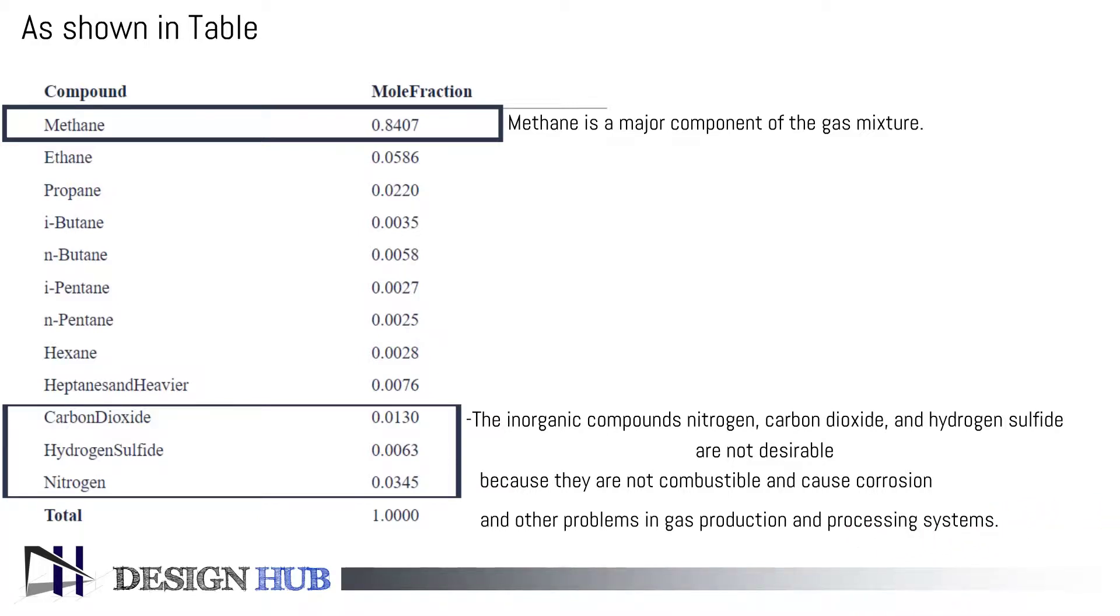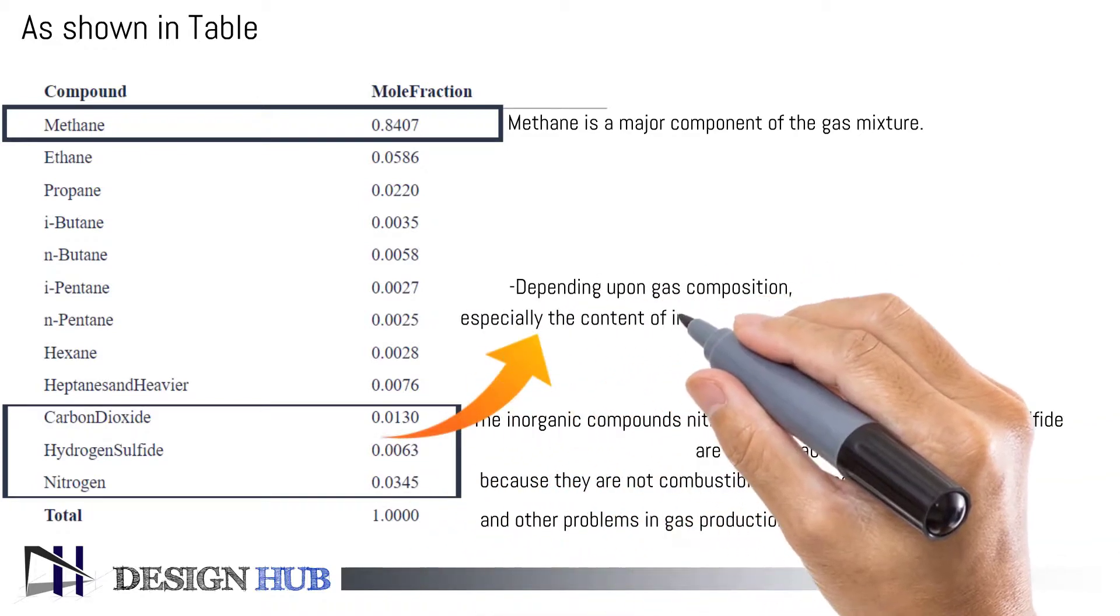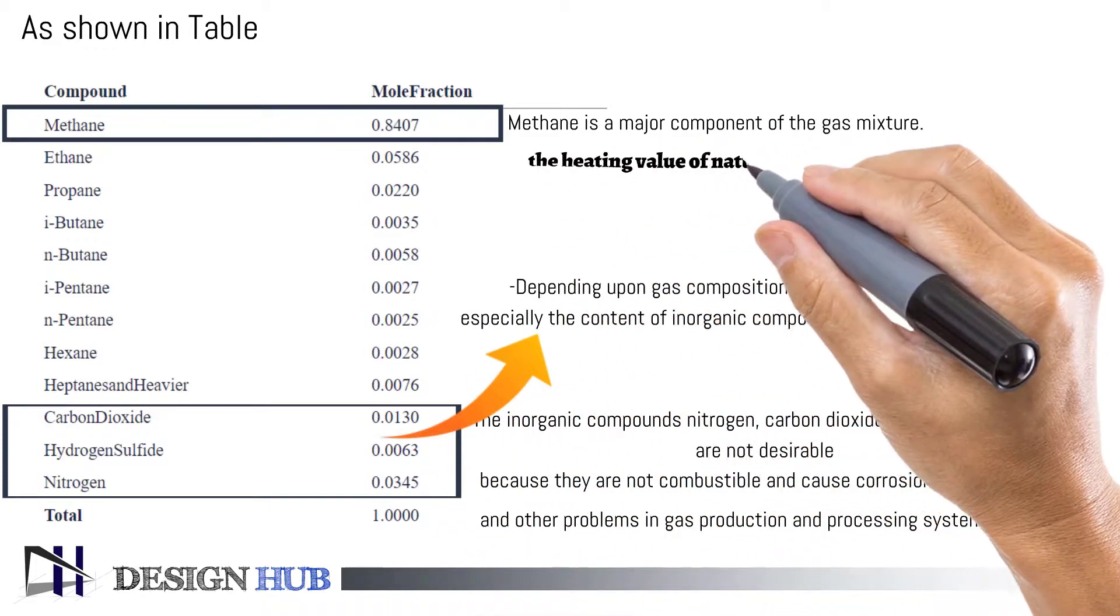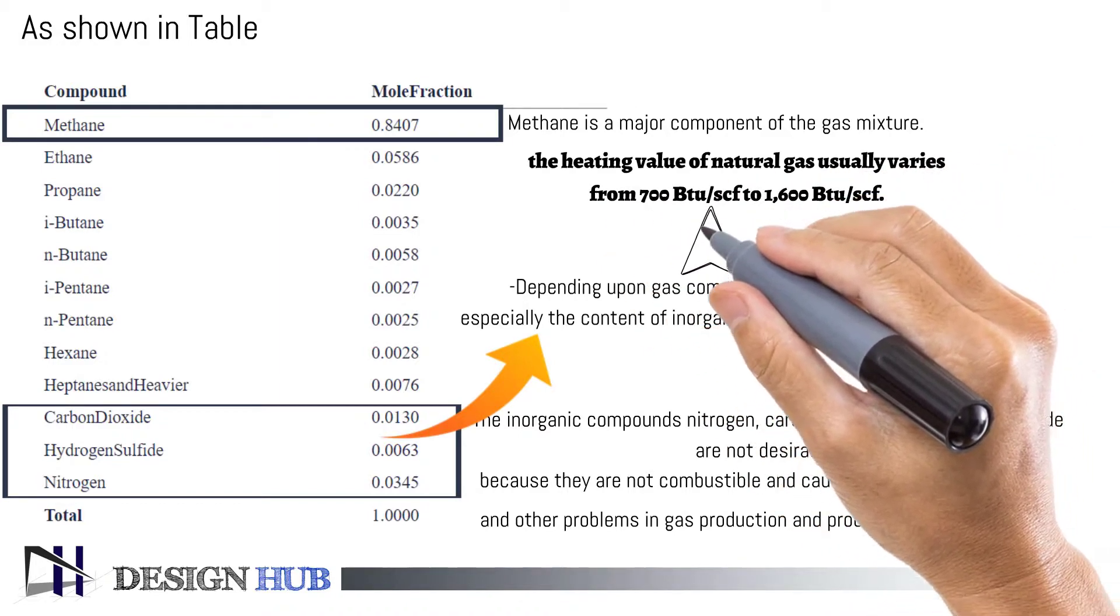Depending upon gas composition, especially the content of inorganic compounds, the heating value of natural gas usually varies from 700 BTU-SCF to 1600 BTU-SCF.